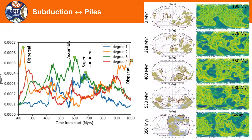We can now take different stages of the supercontinent cycle as seen at the surface, and then 190 million years later — accounting for the lag time — see how that looks at the core-mantle boundary and get the different patterns we can use as boundary conditions for our geodynamo models.